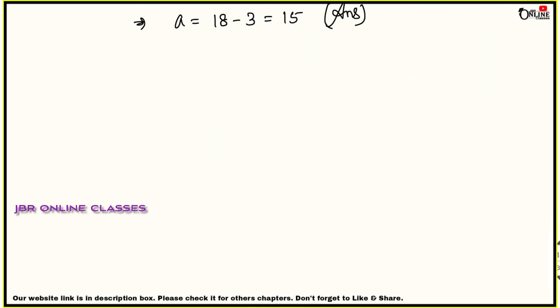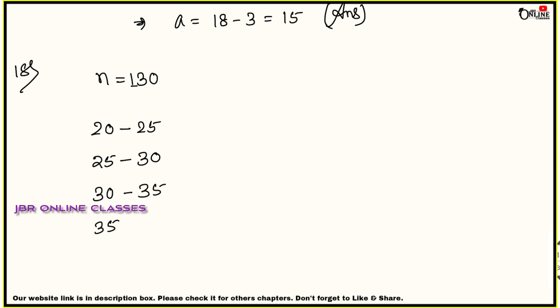If you like this video, please share it and subscribe to my channel. Sum number 18: The table gives ages of 130 members, so total frequency n = 130. Age intervals: 20–25, 25–30, 30–35, 35–40, 40–45. Frequencies: 2, x (unknown), 29, 43, y (unknown). We'll let the unknowns be x and y, similar to sum number 17.